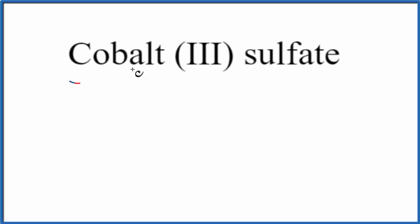In this video, we'll write the formula for cobalt III sulfate. So the first thing we'll do is we'll write the element symbol for cobalt. On the periodic table, cobalt is Co.